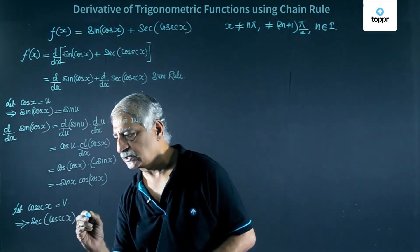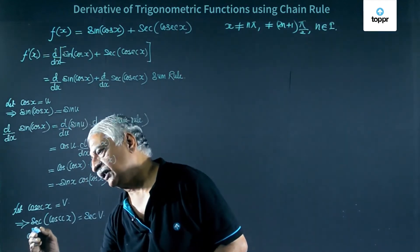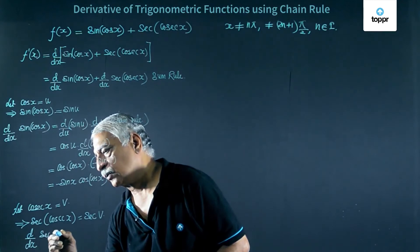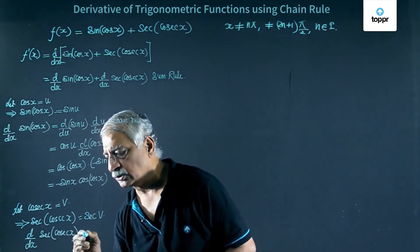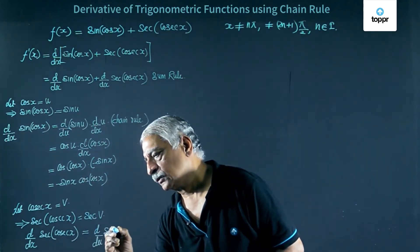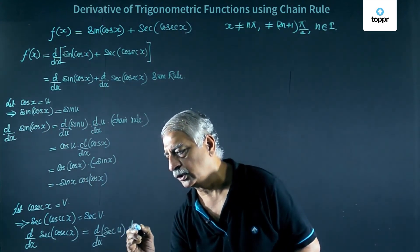Then again d by dx of sec of cos x will be equal to d by dv of sec v into dv by dx.